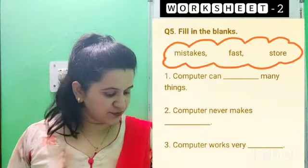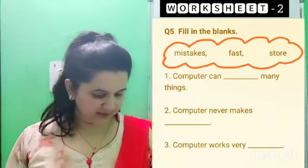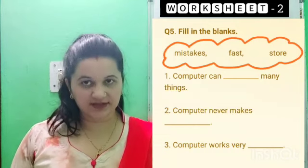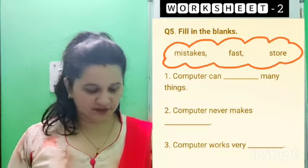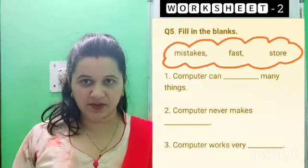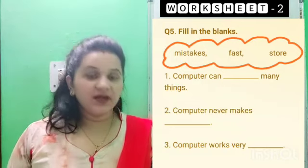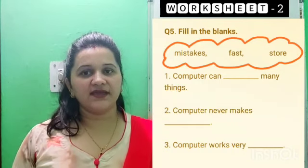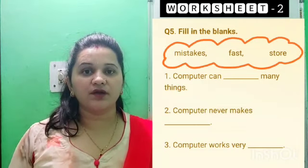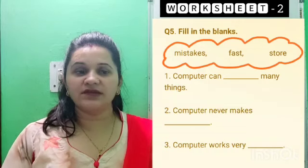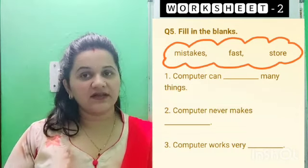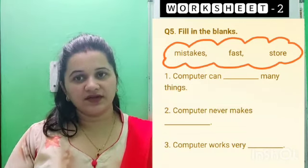Come to question number five: fill in the blanks. Here I am giving you hints in the cloud box — three hints are given. You have to find the answer from them and write it in the correct statement given below. The first one is: computer can blank many things. What can a computer do — like music, games? Find the correct answer from the three options given and write it down. The second one: computer never makes what? Find the answer and write it down.